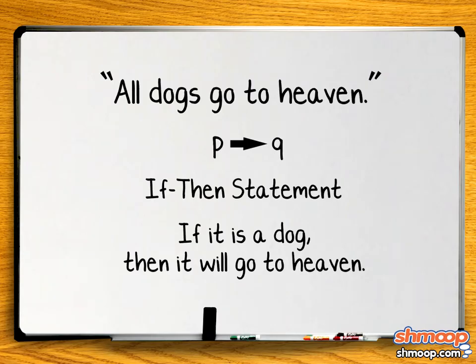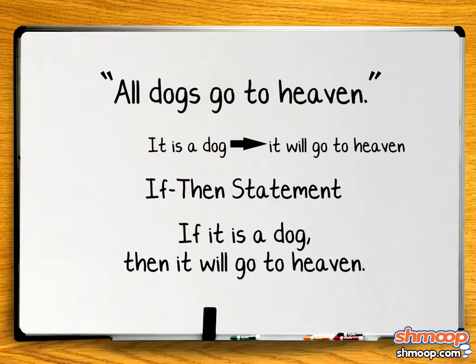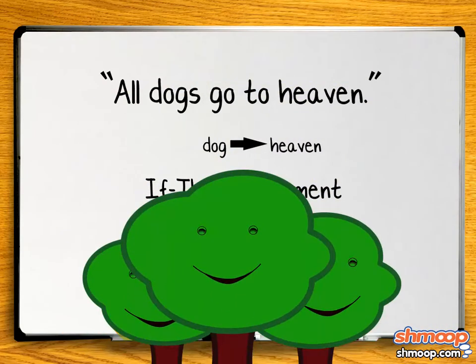So really, all we need to do is replace our P with our hypothesis and Q with our conclusion. Since our statement is 'if it is a dog, then it will go to heaven,' our hypothesis is 'it is a dog' and our conclusion is 'it will go to heaven.' Draw an arrow in between them and we've done it. We can even condense it further, and maybe save a few trees.